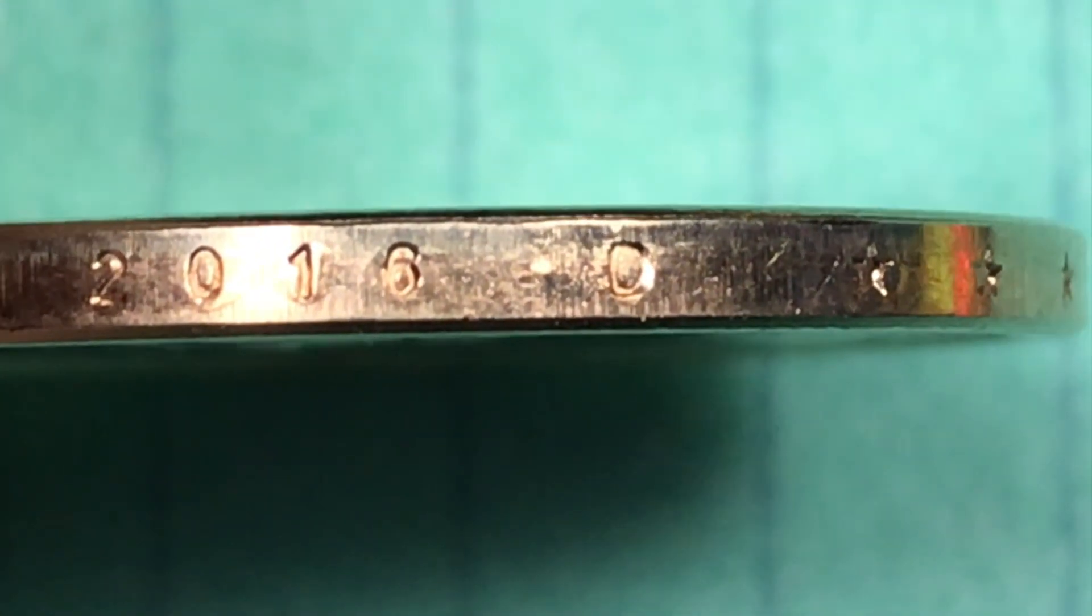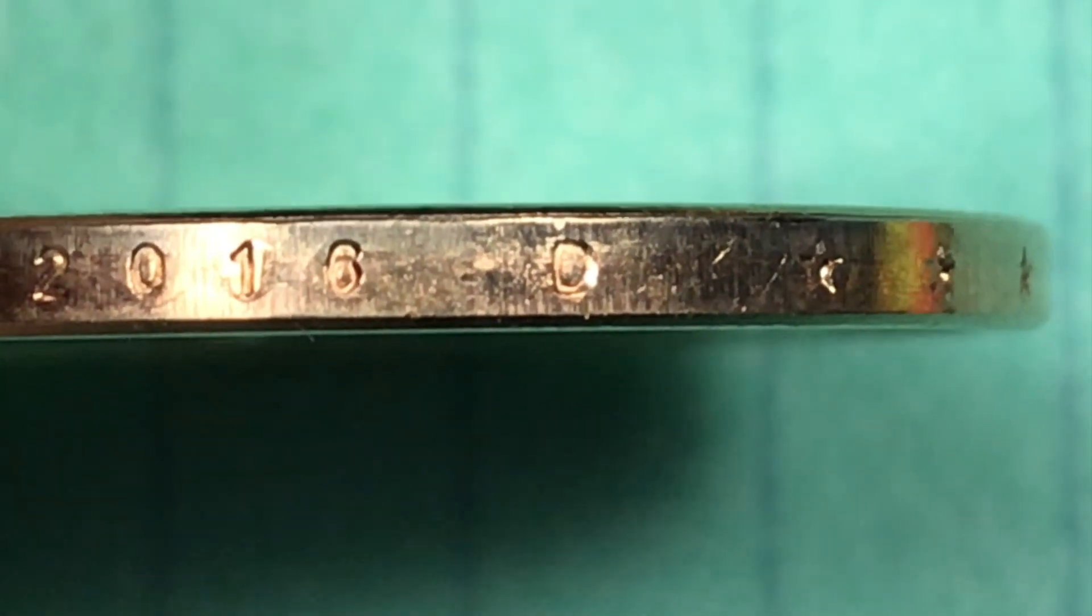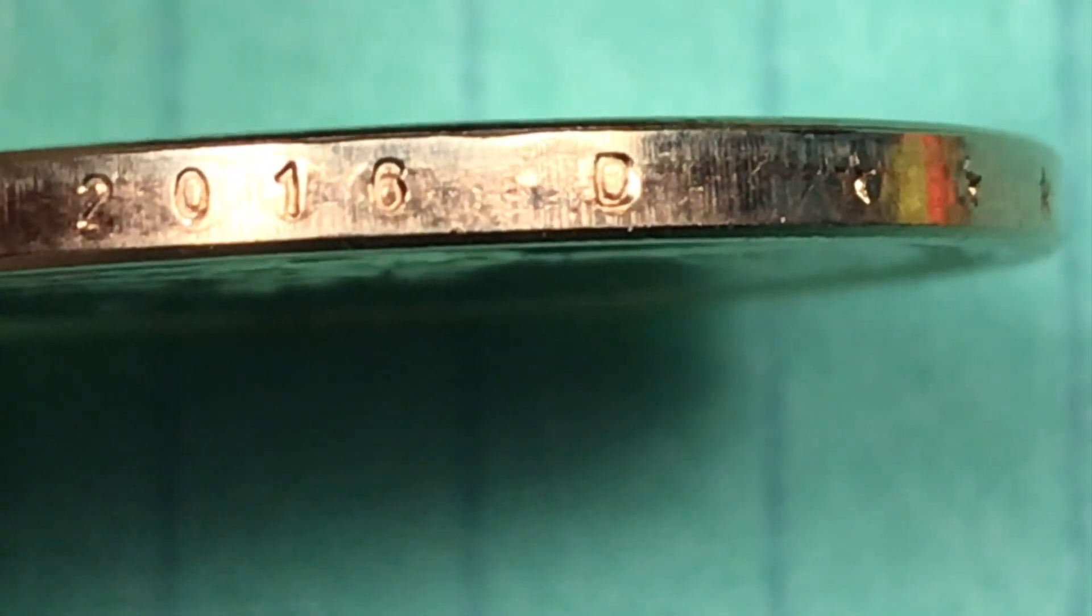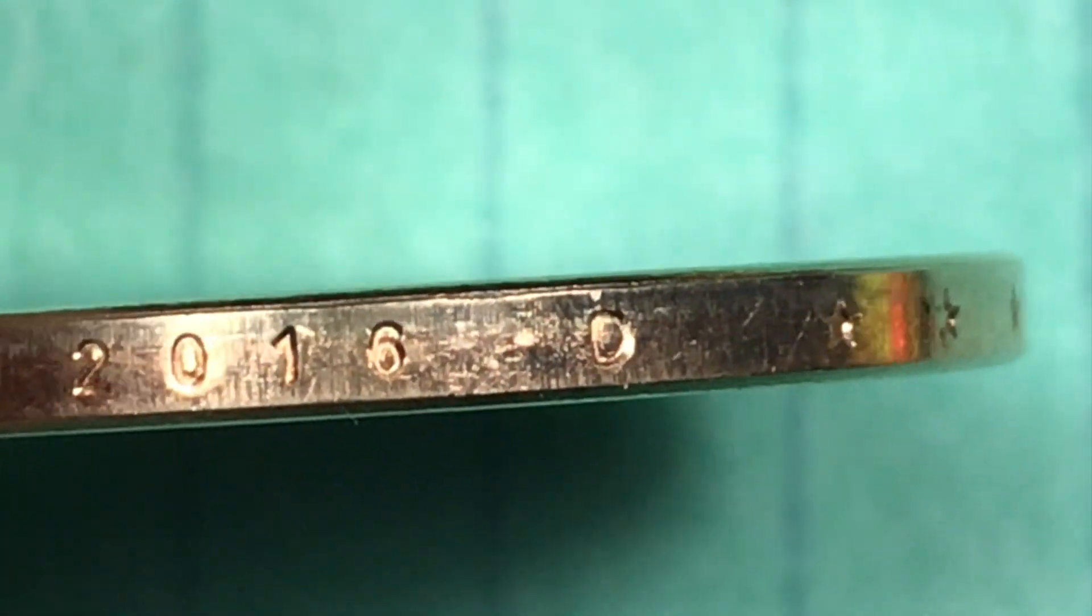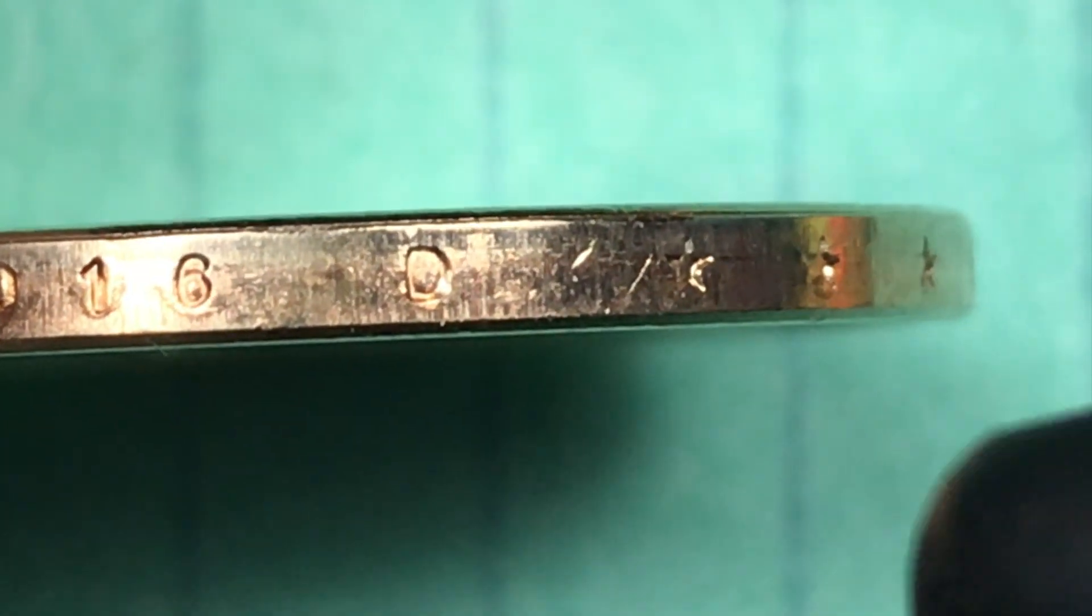They also made these at the Denver Mint. You'll see the D right here. At the Denver Mint they made 7.1 million. For Position A the best ones are $175, and for Position B the best ones so far sold for $175.